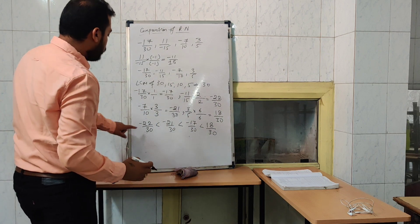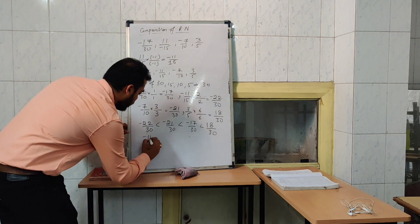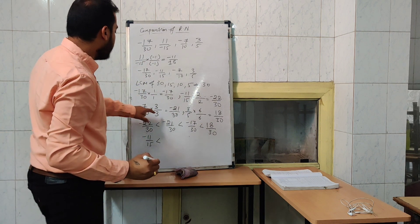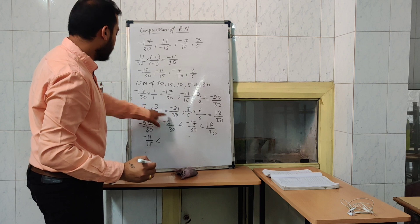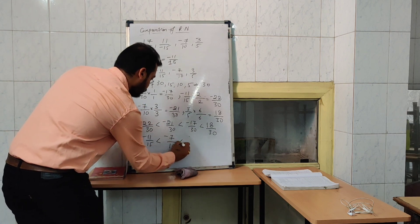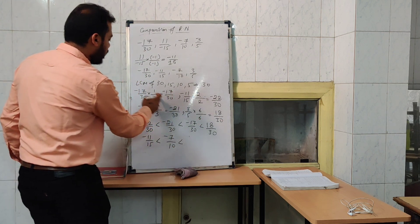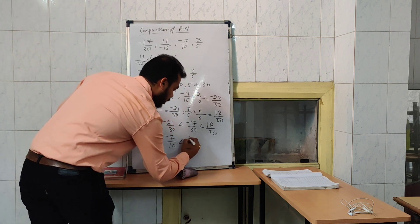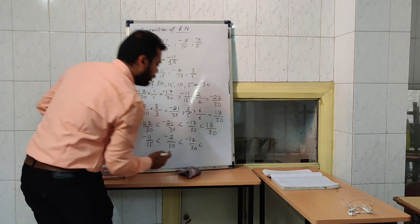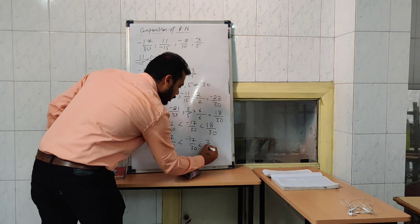Minus 22 by 30 comes from minus 11 by 15. Minus 21 by 30 comes from minus 7 by 10. Minus 17 by 30 comes from minus 17 by 13. And 18 by 30 comes from 3 by 5.